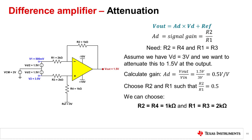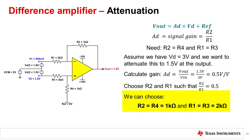Assume we have an input differential voltage of 3 volts in the presence of a 2 volt common mode voltage that we want to attenuate in half. We select R2 and R1 such that R2 divided by R1 equals 1/2. In this case, R2 and R4 are equal to 1 kΩ and R1 and R3 are equal to 2 kΩ. The amplifier extracted and attenuated only the differential voltage, rejecting the common mode voltage, to yield the desired output of 1.5 volts.